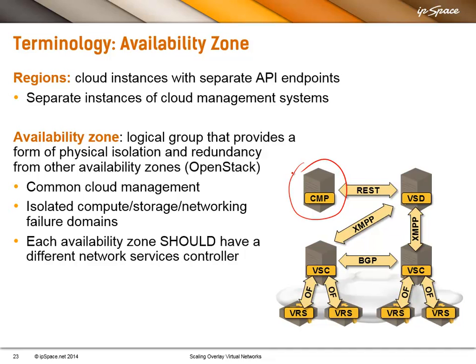As you know, when Amazon has a bad hair day and one of the regions is down, there are numerous people who are unreachable. But Netflix is always up and running because they designed their application to spread the load over multiple regions. Even if Amazon loses one region completely, Netflix is not affected.